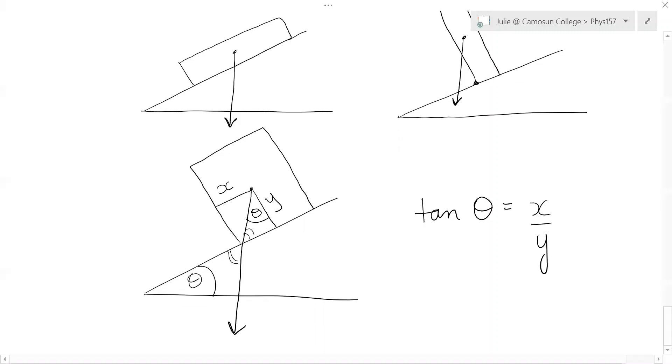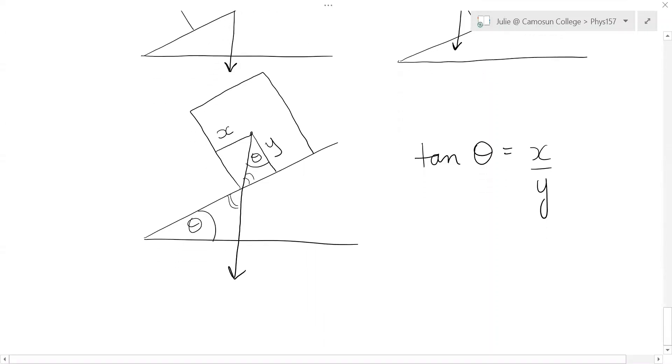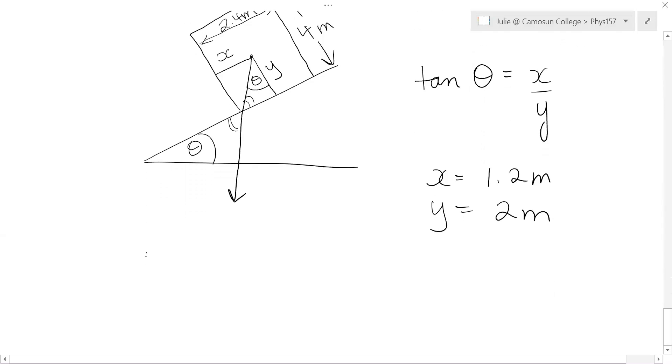It does have to be uniform though. So X is halfway along. So they give you the dimensions of the truck. The truck is 2.4 meters wide. So they tell you that this is 2.4 meters, which means X is half of that. So X is 1.2 meters. And they tell you how tall the truck is. It's a four meter tall truck. This is 4 meters. So Y must be 2 meters. And so tan theta is 1.2 divided by 2. So this leads to theta of 29 degrees.